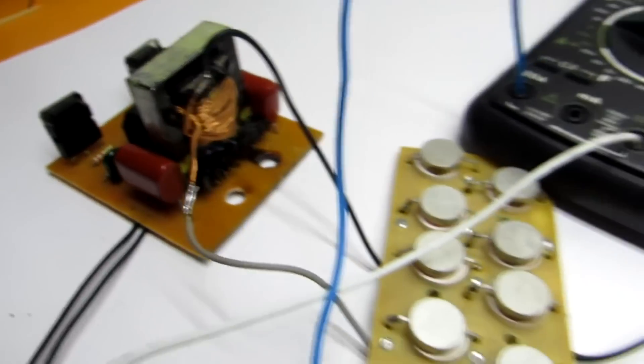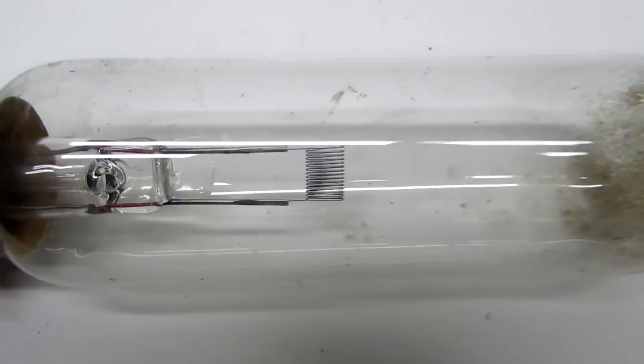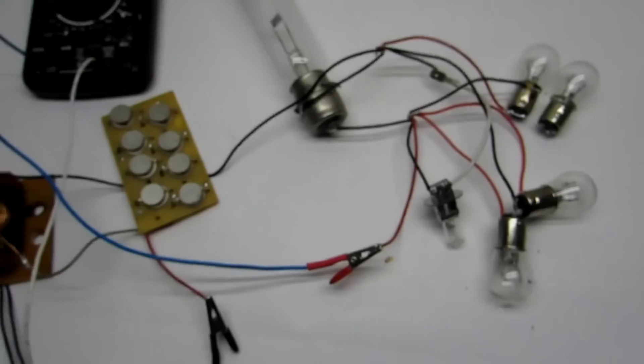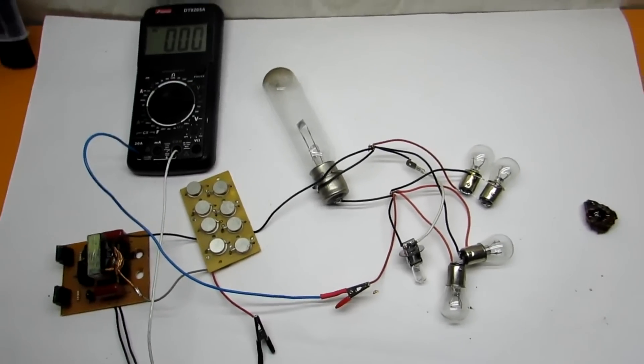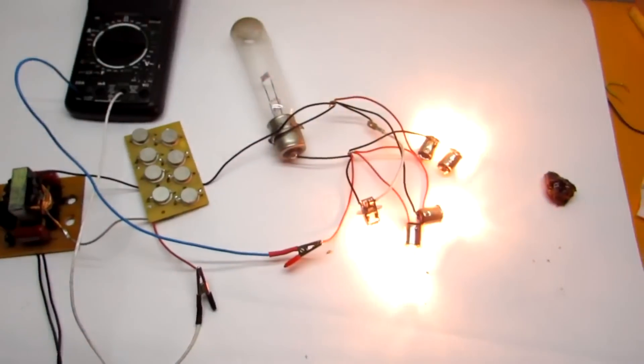The secondary winding actual output is 70 volt at idle. Now I will load circuit. I have 400 watt film projector lamp and 5 pieces 12 volt lamps at 20 watt each, all connected in parallel.